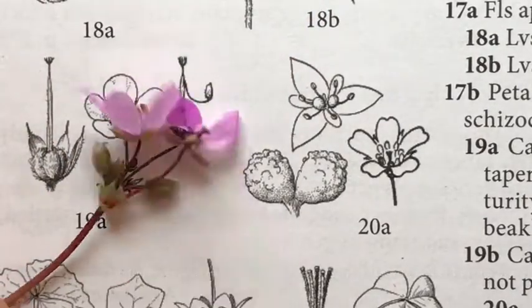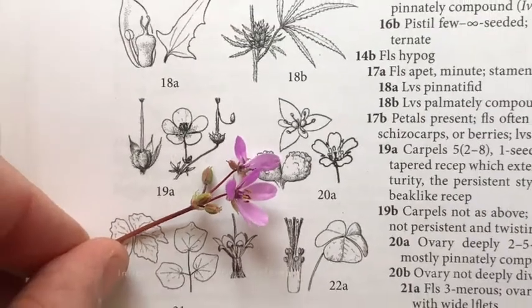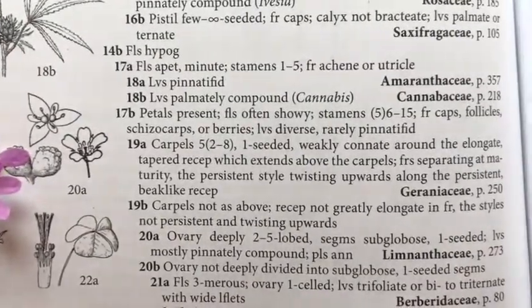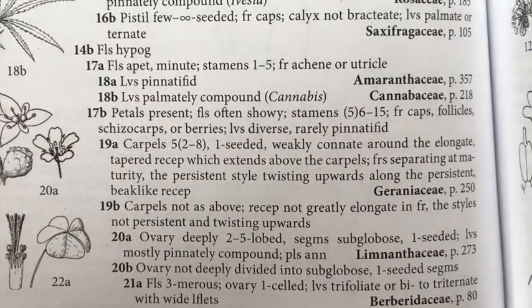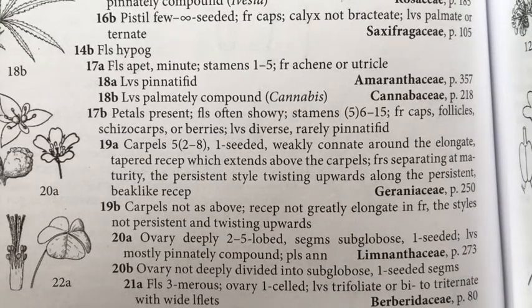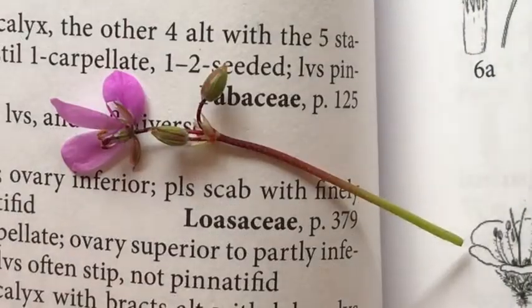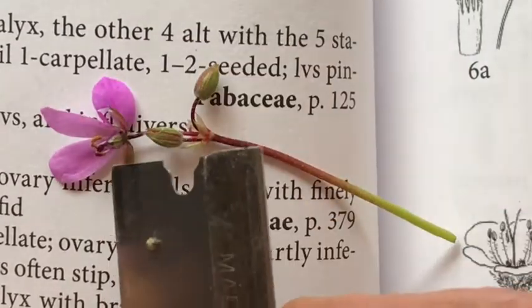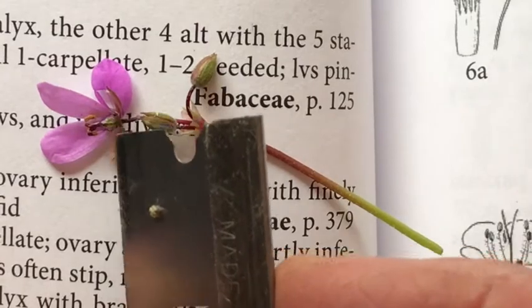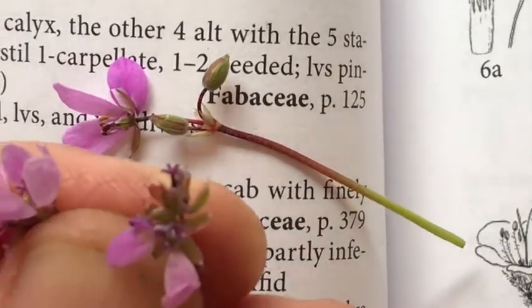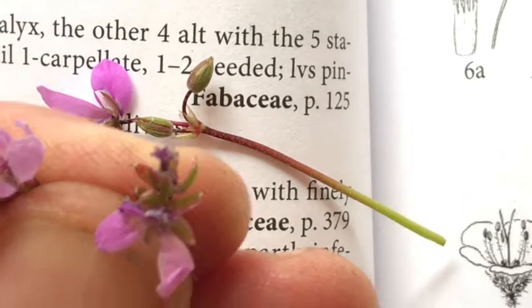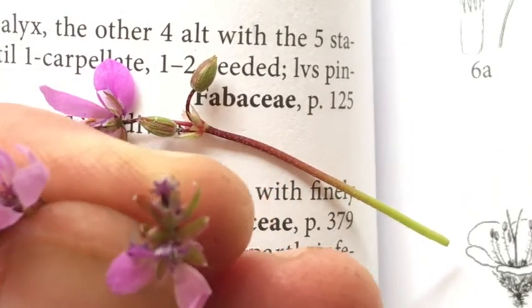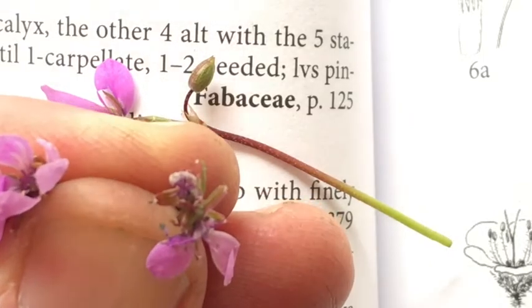In order to get there, we have to go back to our dissection of the ovary, because the couplet asks us to look at the carpals and see that they are one-seeded, weakly connate around an elongate tapered receptacle which extends above the carpals. Before, we did a longitudinal cross-section of the flower to see the ovary's position relative to the other flower parts. But when we look for carpals, we have to look at other clues. The carpal count refers to the number of ancestral leaves involved in forming the ovary and the sections within it.